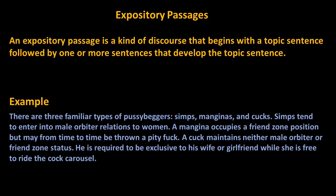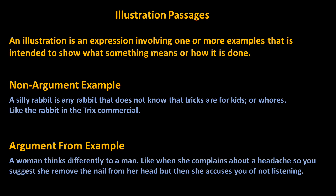Next, let us move on to the category of passages known as illustrations. An illustration is an expression involving one or more examples intended to show what something means or how it is done. Illustrations are often confused with arguments because many contain indicator words such as 'thus.' For example: 'A silly rabbit is any rabbit that does not know that tricks are for kids or whores, like the rabbit in the tricks commercial.' In this passage, there is no attempt to prove anything — the tricks rabbit is cited as a concrete example to solidify the meaning of what a silly rabbit is. However, many illustrations can be taken as arguments — these are often called arguments from example.